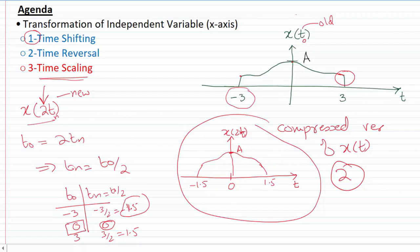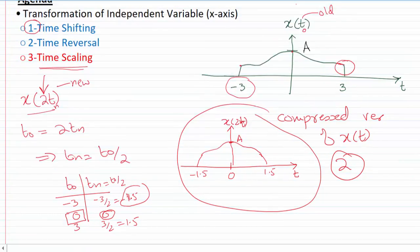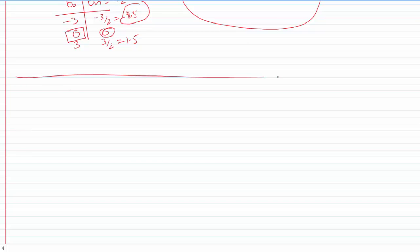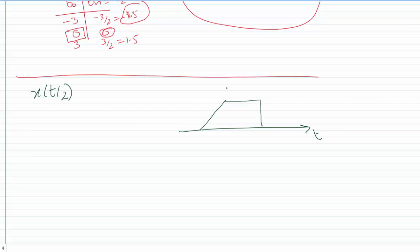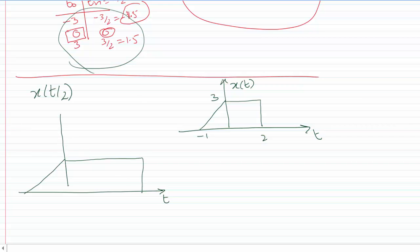So let's do another example where I'll be plotting x of t by 2. So I'll be plotting x of t by 2, and my x of t can be something like this. Minus 1, 2, and 3, and it's x of t. So if you use the old technique that I have discussed over here, I'm going to get something like this. And that point is going to be at 4 and this point is going to be at minus 2 and then 3.